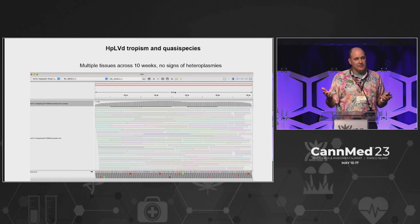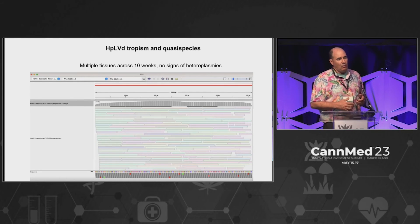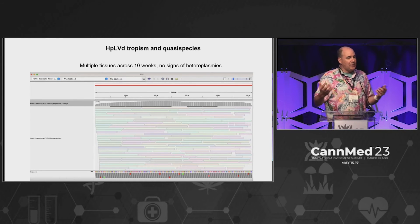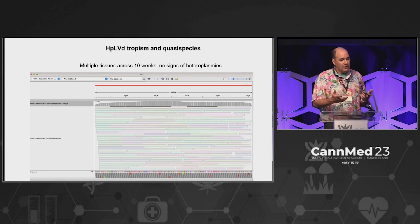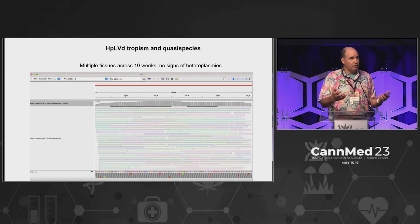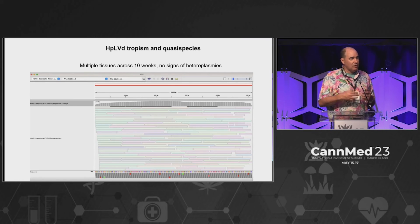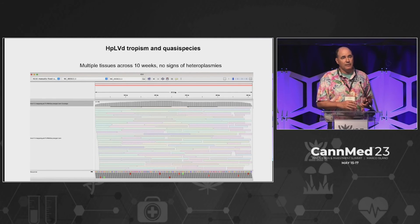One question people ask is: with this much RNA sequencing data, did we pick up any hop latent viroid in there? And we did. We shouldn't have because we used poly-A capture, but some of the viroid is at such high concentration it comes through. And it's all the same — there isn't a quasi-species thing going on in this plant. It's one clonal copy of HPLVD across all the tissues that we found it in.